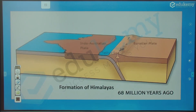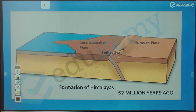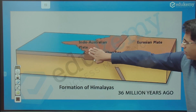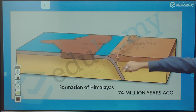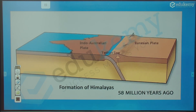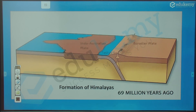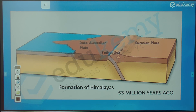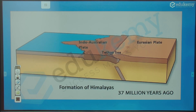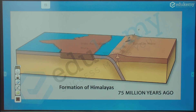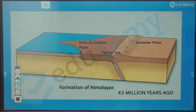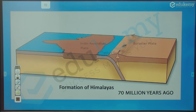The Indo-Australian plate — specifically the Indian part — came from the south and hit the Eurasian plate. The Tethys Sea closed as the collision of the Indian plate with Eurasia occurred, and the Himalayas formed. Himalayan upliftment started approximately 60-62 million years ago.